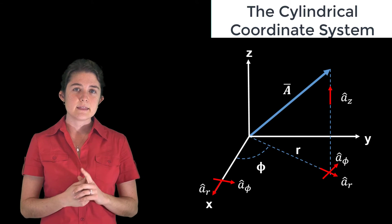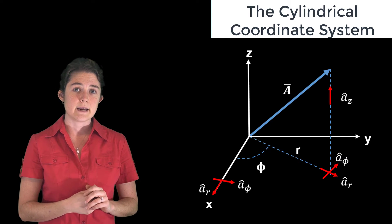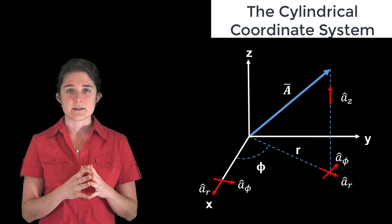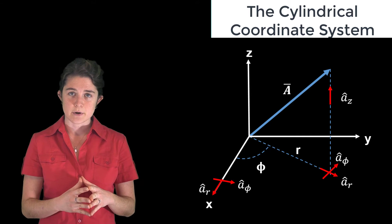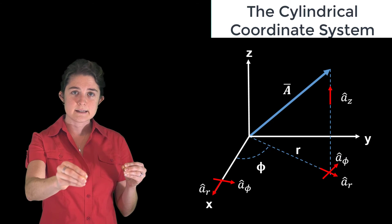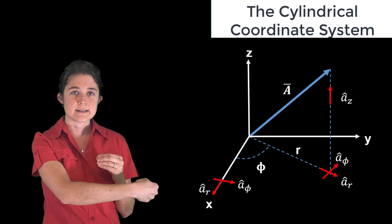Note that like the XYZ triad, RFIZ is also a right-handed progression. In this coordinate system, the variable z is exactly the same as in the Cartesian coordinate system we discussed before. R is a linear measurement outward from the z-axis, and phi is angle measured counterclockwise from the x-axis.